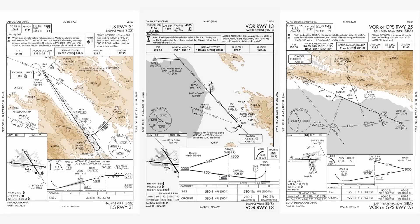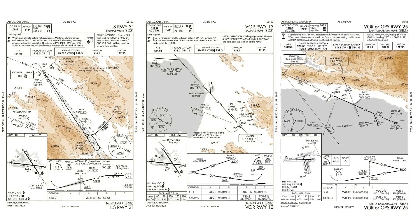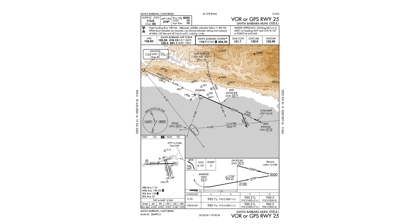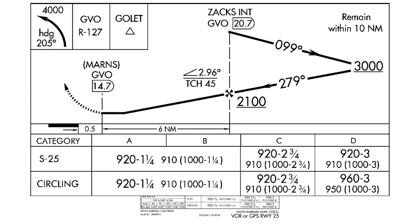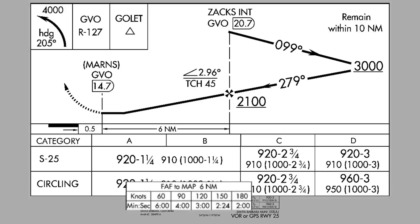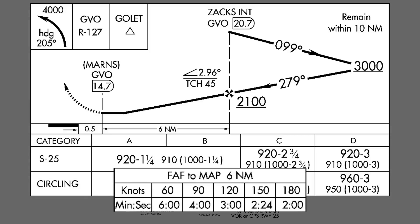Let's look at one more approach for a different way we may need to identify our missed approach. This is the VOR into Santa Barbara, Runway 25, a bit further down the fog-covered coastline. If we had DME, we could identify the missed approach point as 14.7 DME from the Gaviota VOR, but unlike the last approach, DME isn't required. So without it, what we'll need to use is good old-fashioned timing. The plate includes a timing table showing, for various ground speeds, what the time will be to travel from the final approach fix to the missed approach point — just a simple distance and rate calculation. We should know our aircraft's typical approach speed; we'll use 90 knots. Going the 6 miles from the FAF to the MAP at that ground speed should take us 4 minutes, so we'll time our descent from the FAF and execute the missed after 4 minutes.